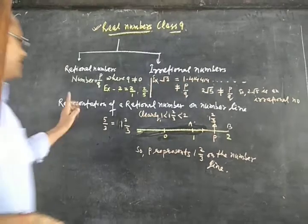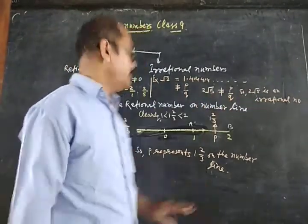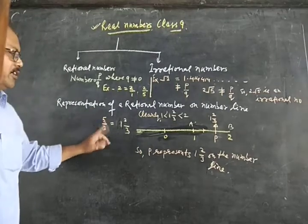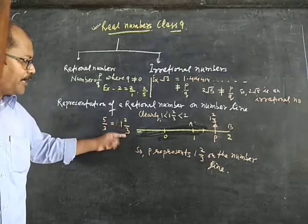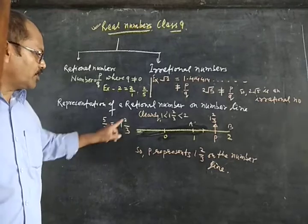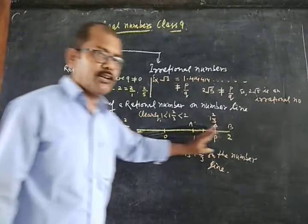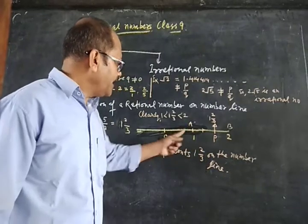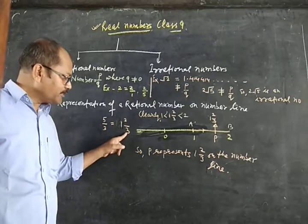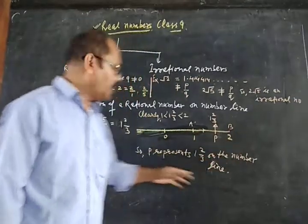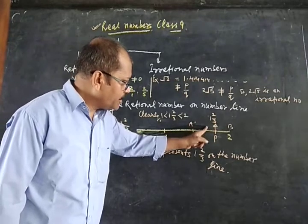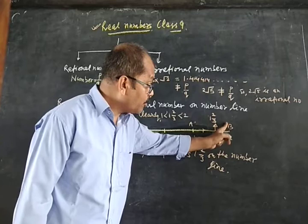Let's look once more at how to represent a rational number on the number line. Suppose 5/3 is given. Firstly, convert 5/3 into a mixed fraction — it will be 1 and 2/3. Guess in your mind: this number lies between 1 and 2. After that, divide AB into 3 equal parts according to the denominator. If denominator is 4, divide into 4 equal parts. The three subdivision points from 1 will be: 1 and 1/3, then 1 and 2/3, then 1 and 3/3.